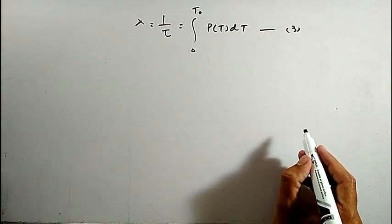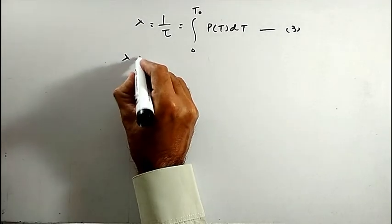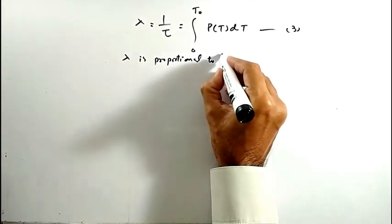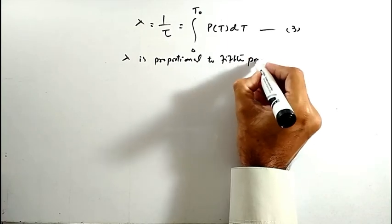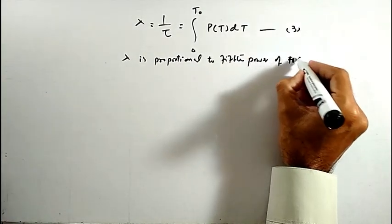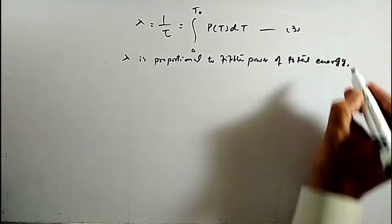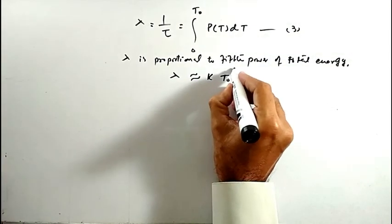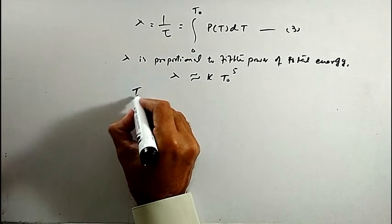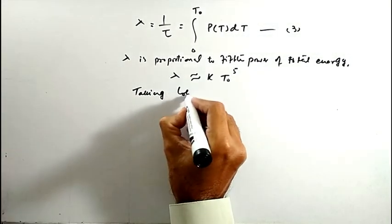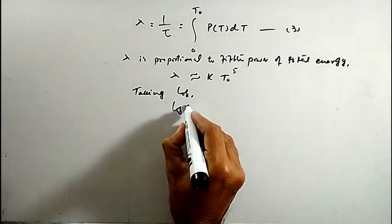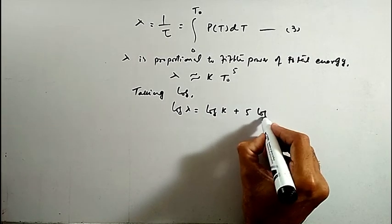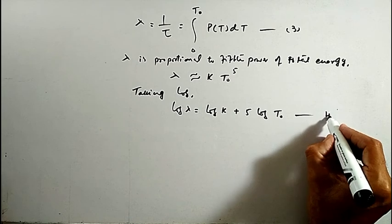Solving this equation, it is found that λ is proportional to the fifth power of the total energy T₀. So we can write λ is proportional to k·T₀⁵. Taking the logarithm, log λ = log k + 5 log T₀. This is Equation 4.